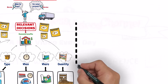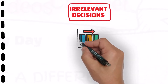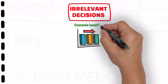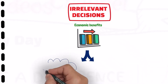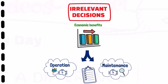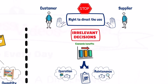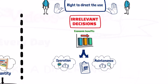On the other side, there are other decisions that are irrelevant — they don't affect the economic benefits to be derived from the use of the asset. They are limited only to the operation and maintenance of the asset. Although these decisions are essential to the efficient use of the asset, they don't grant the customer or the supplier any right to direct the use of the asset.